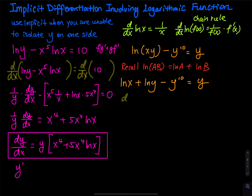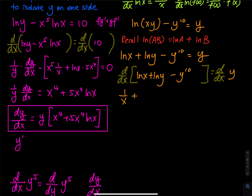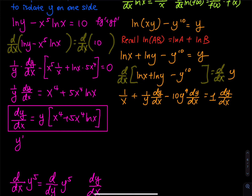Take the derivative on both sides with respect to x. The left side is ln(x) + ln(y) minus y to the 10, and the right side is y. The derivative of ln(x) is simply 1/x. The derivative of ln(y), as explained before, is (1/y) dy/dx. For y to the 10, by the power rule that is 10y to the 9, and you immediately add dy/dx to it. On the right-hand side, the derivative of y is 1 times dy/dx.